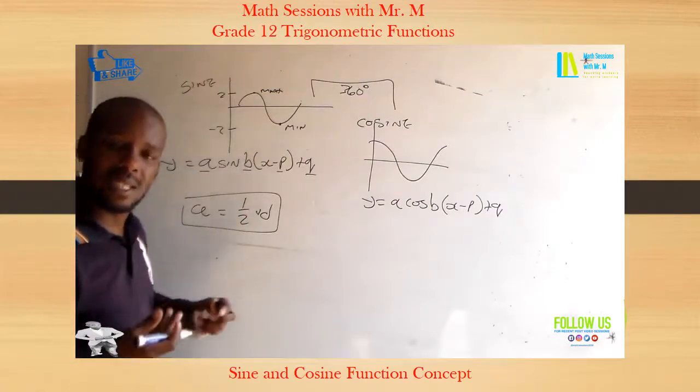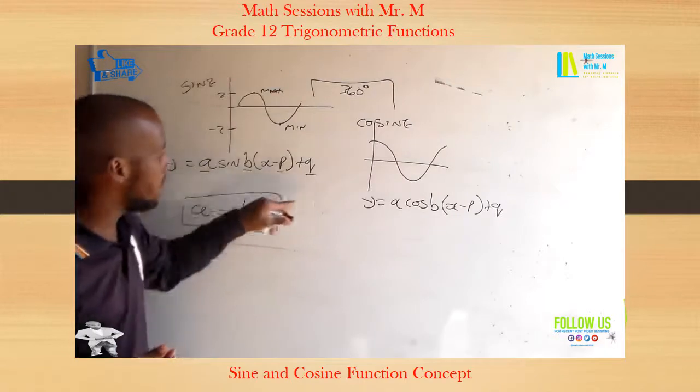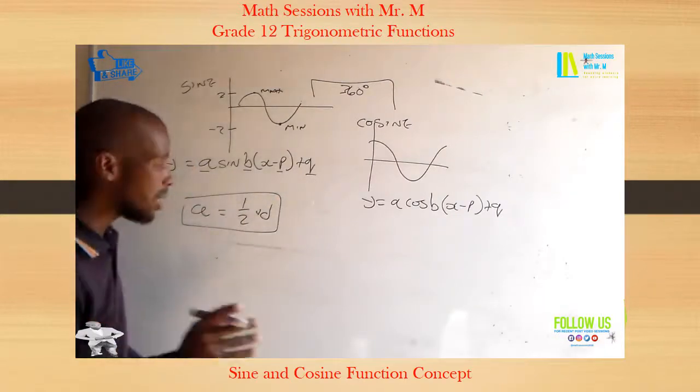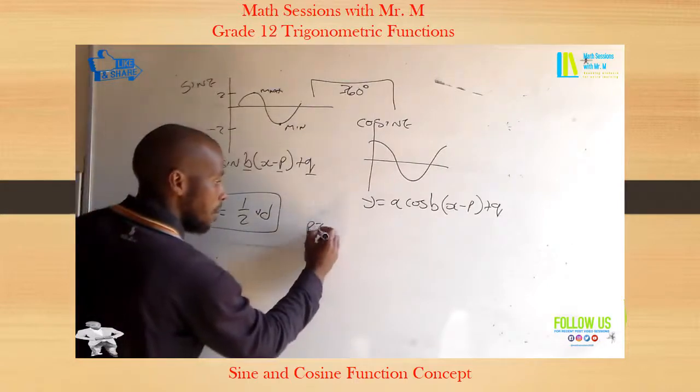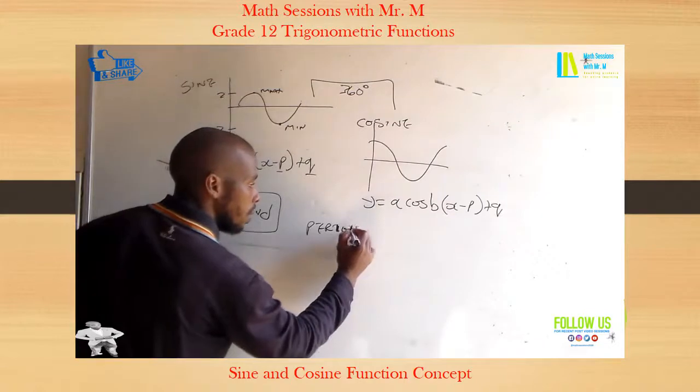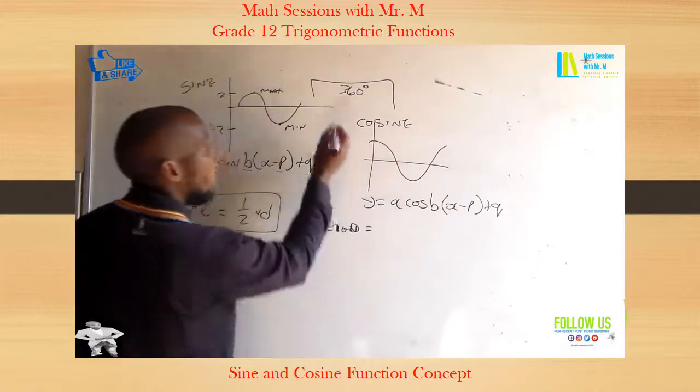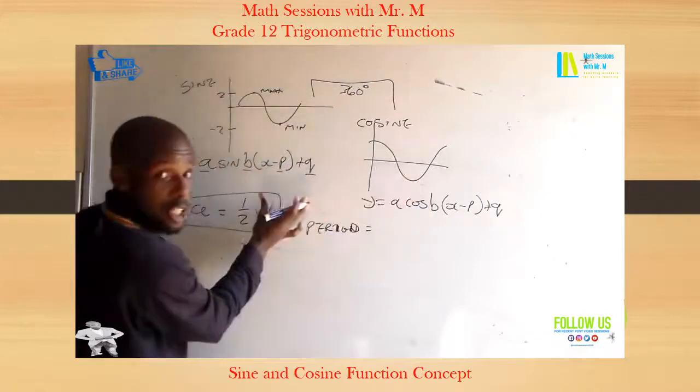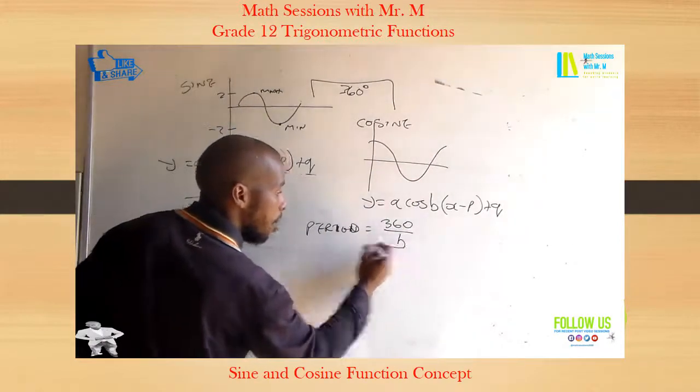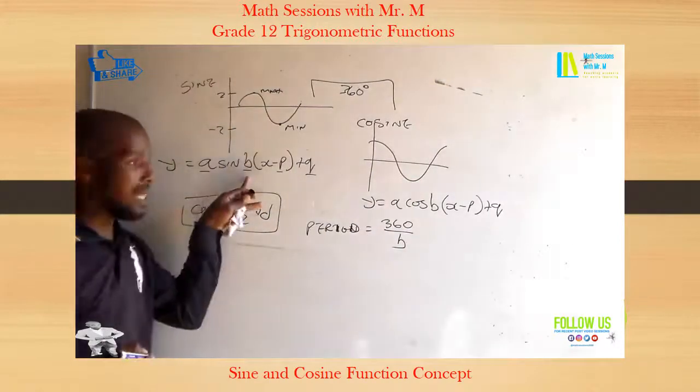B now is the one that makes things easy for you to find and tell us what is the period of the graph. Because the period is calculated by period = 360 degrees divided by B, because it's 360 degrees for both of these two graphs.